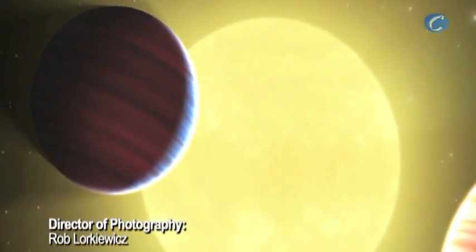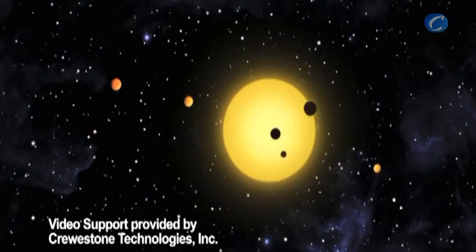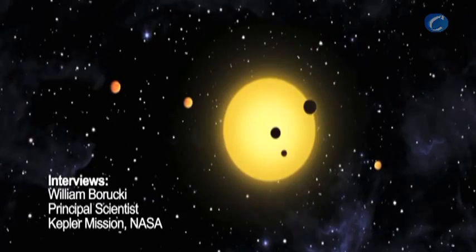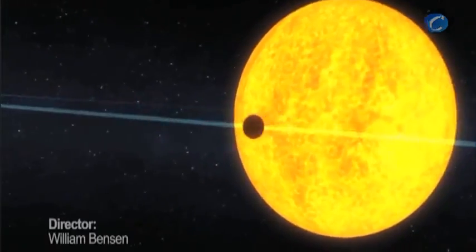We see planets from the size of Mars to planets twice the size of Jupiter, so a huge range of planets. We're finding planets in a habitable zone of stars cooler than the sun. It's going to take us a while to find planets in the habitable zone of a star like the sun, because that simply takes a longer period of time.